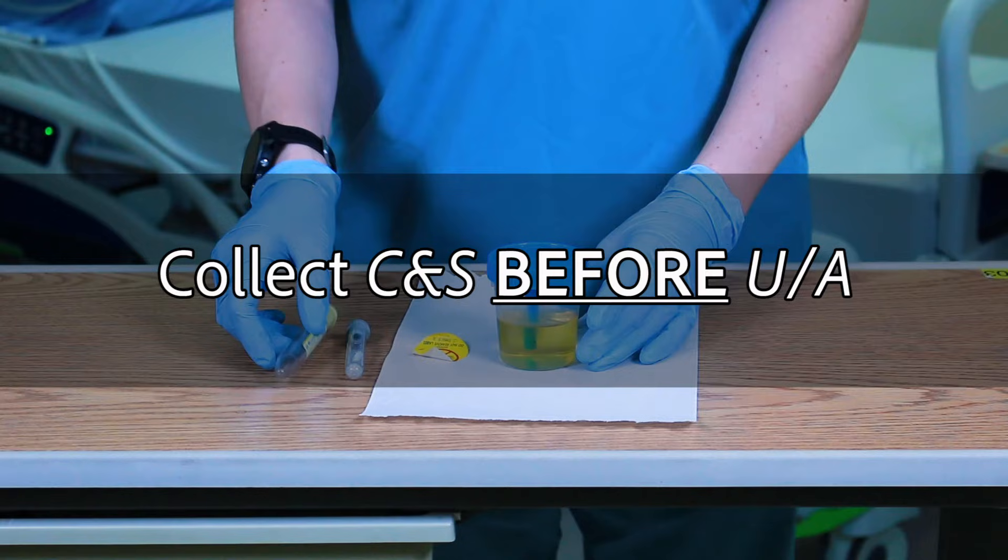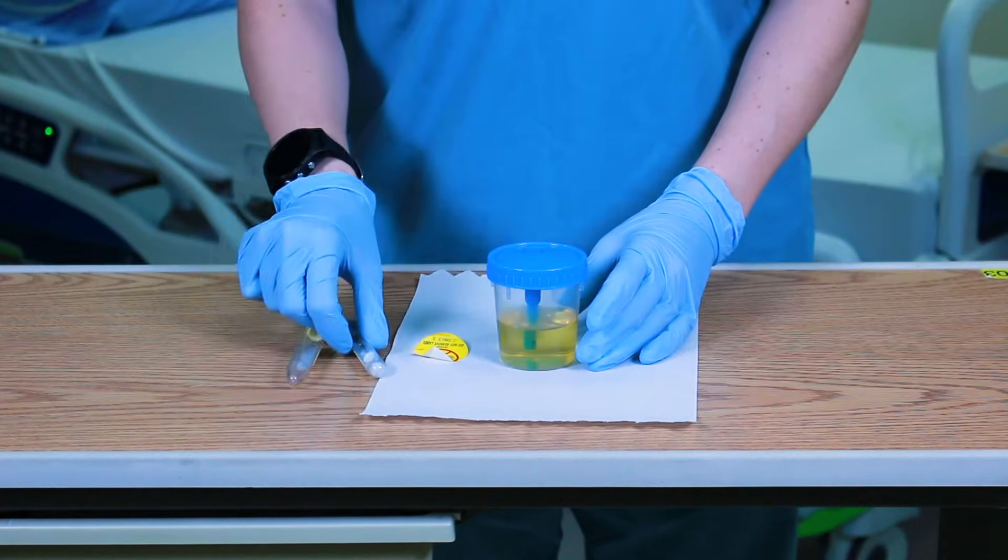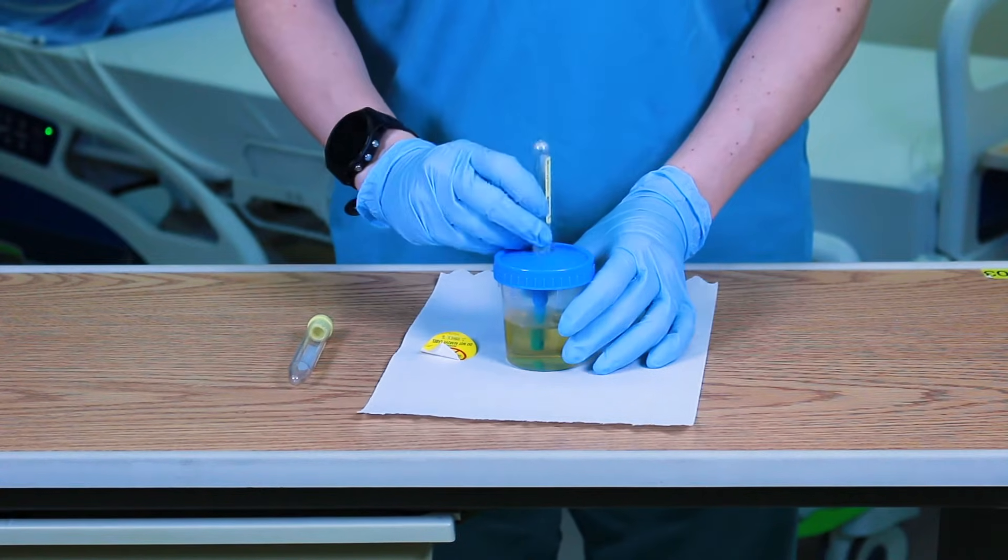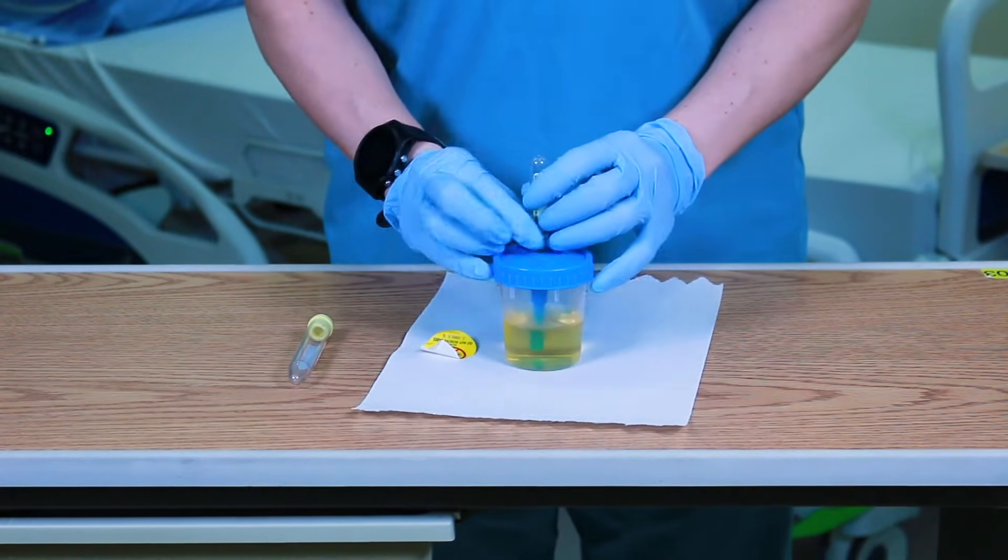If collecting a UA and C&S, collect the C&S before the UA. Place the tube stopper directly over the open transfer device and push firmly down for the needle to pierce the stopper.